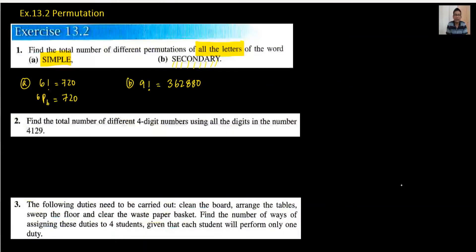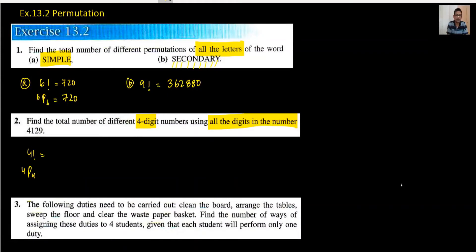In question number 2: find the total number of different 4-digit numbers using all the digits. There is no restriction, so we write 4 factorial or 4 P 4. 4 factorial means 4 × 3 × 2 × 1, which equals 24. You can verify this with a calculator as well.